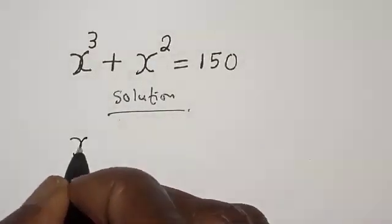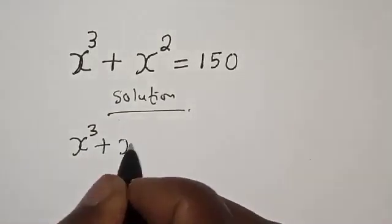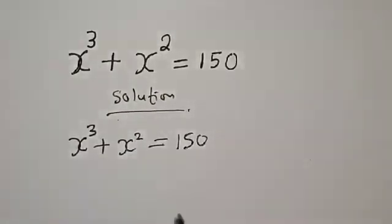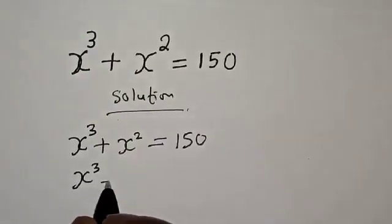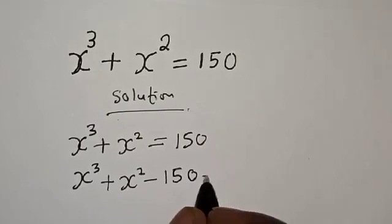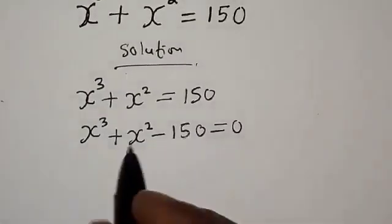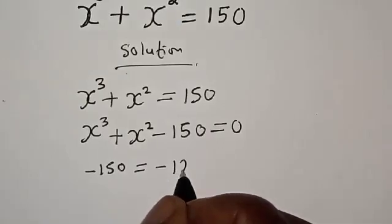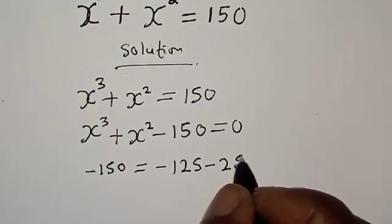Solution: we have the given equation s cubed plus s squared is equal to 150. Then we have s raised to power 3 plus s squared minus 150 is equal to zero. Then we split 150 as 125 plus 25.